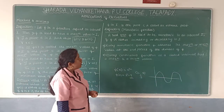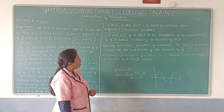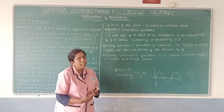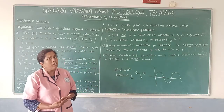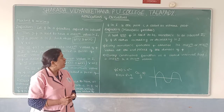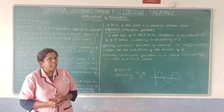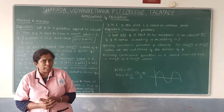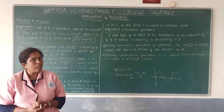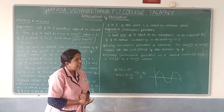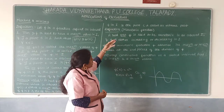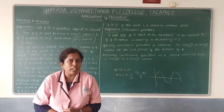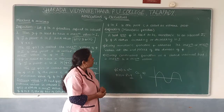The next concept is monotonic function. A real function F is said to be monotonic in an interval I if F is either increasing or decreasing. We know that if x₁ < x₂ then F(x₁) ≥ F(x₂) means increasing, and F(x₁) < F(x₂) means decreasing. If the function is either increasing or decreasing in an interval, it is called monotonic.